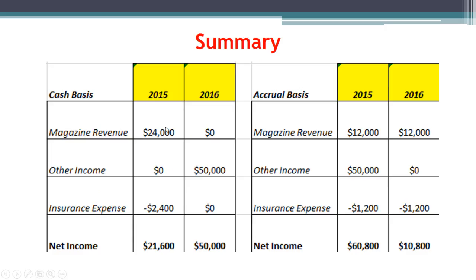Comparing both methods using these examples: under the cash basis, we get $21,600 of net income in 2015 and $50,000 in 2016. Under the accrual basis, we get $60,800 in 2015 and $10,800 in 2016. There's quite a difference in how income is allocated between years. However, if you add both years together, you get $71,600 under either scenario — the total net income is the same. It's simply a question of how it's allocated between years.